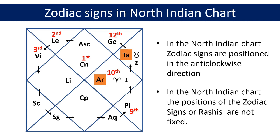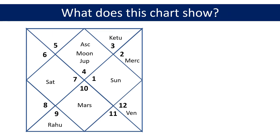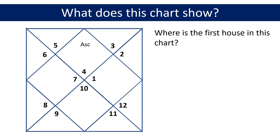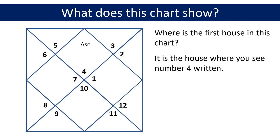Now people always have some confusion when they see numbers written in the houses in the chart. The chart on your screen is a North Indian chart for Lord Sriram. Removing the planet names so that only numbers and the ascendant remain — where is the first house? We have just learned that the house positions are always fixed in the North Indian chart. The first house is always the diamond shaped rectangle in the top center of the chart where the ascendant is placed. Therefore the first house in this chart is where you see the number four written.